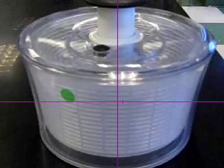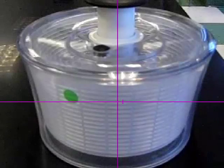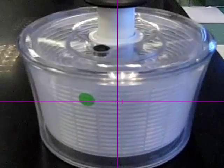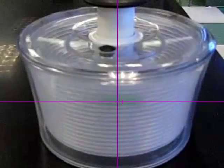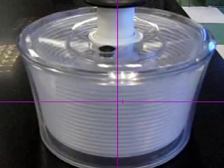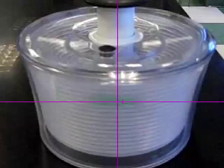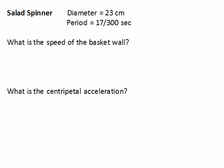I put a green sticker on the side of the basket so I could track it in video shot with a high speed camera shooting at 300 frames per second. And here you can see it's blurred out. And it takes 17 frames to go around once when the basket was going fast. So 17 three-hundredths of a second is the period of the basket.